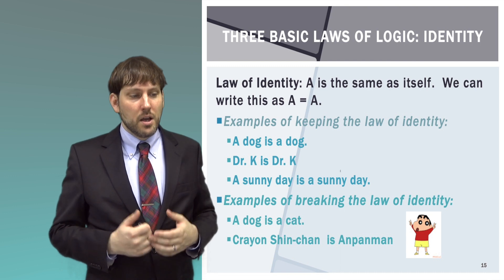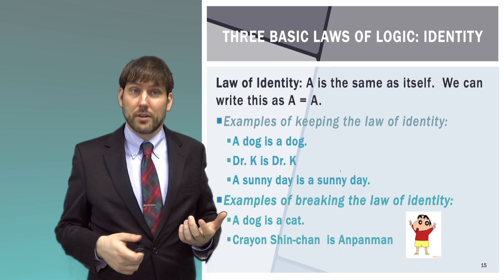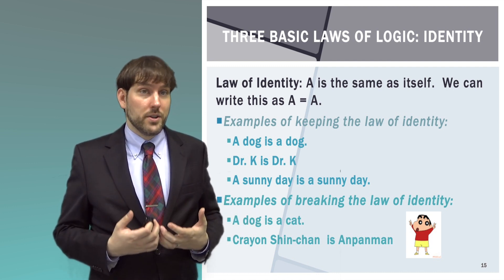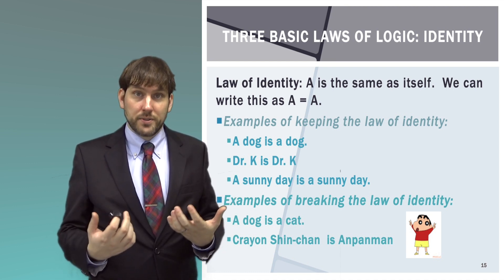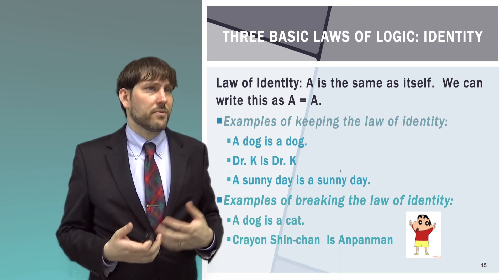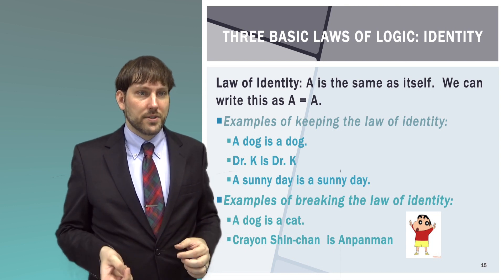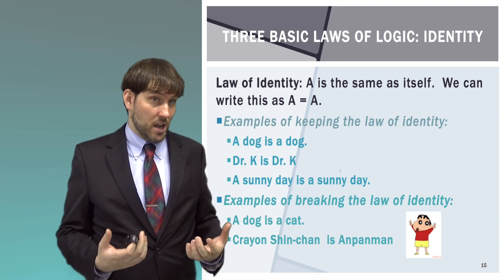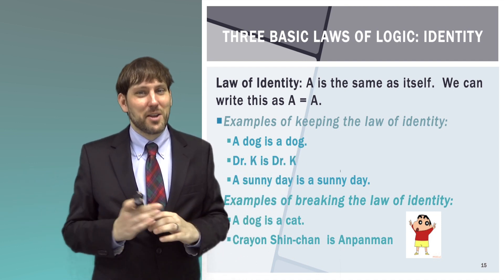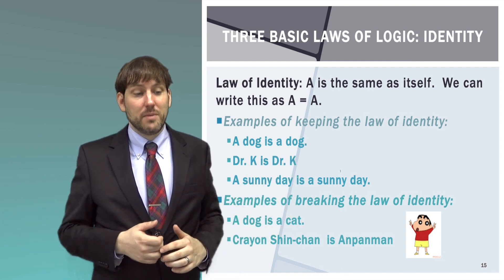First, the law of identity: A is the same as itself — A equals A. This is important because it sets us up to do everything else; if this is not true, everything falls apart. It seems very obvious, but it is a very important concept in math and philosophy. It is the concept that things have a type of permanence — they stay the same. If things don't stay the same, we cannot prove anything.